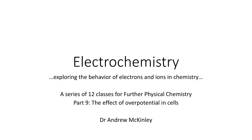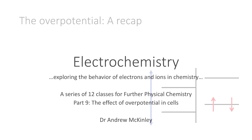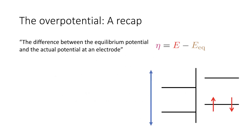We will now examine the effect of overpotentials in our electrochemical cells. In order to do this, we need a quick recap of the overpotential. The overpotential is simply the difference between the equilibrium potential and the actual potential at an electrode — a fairly simple quantity to measure.